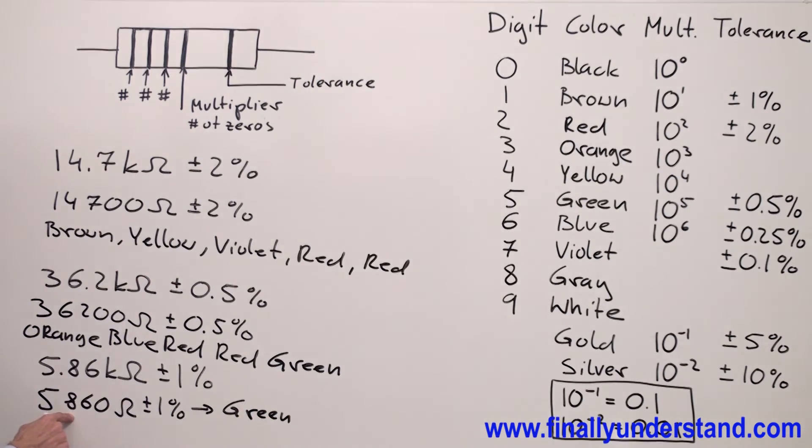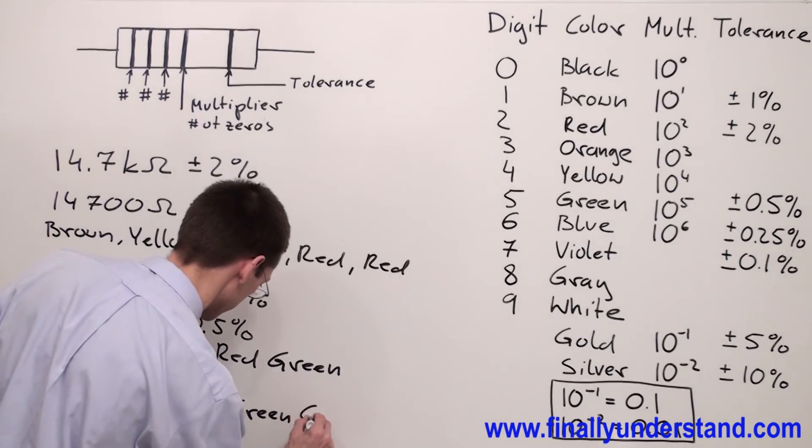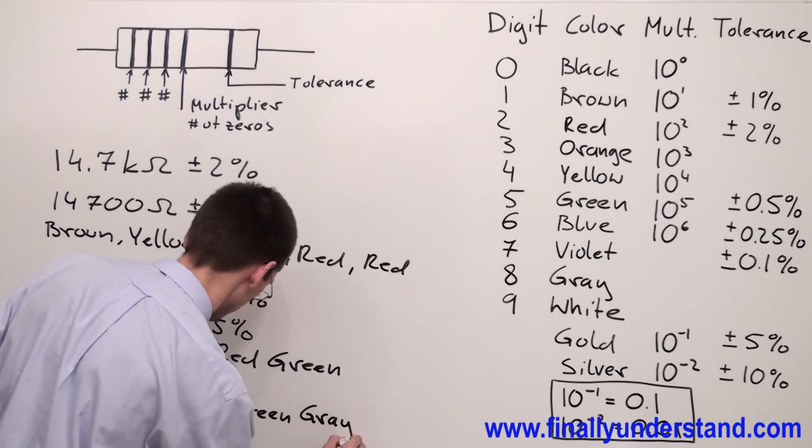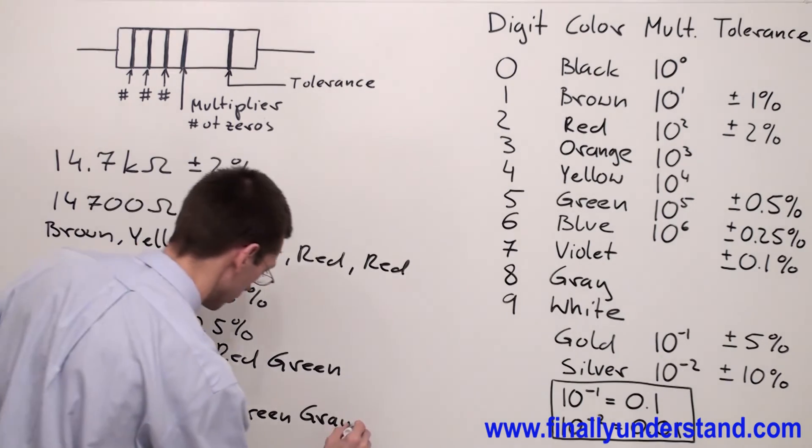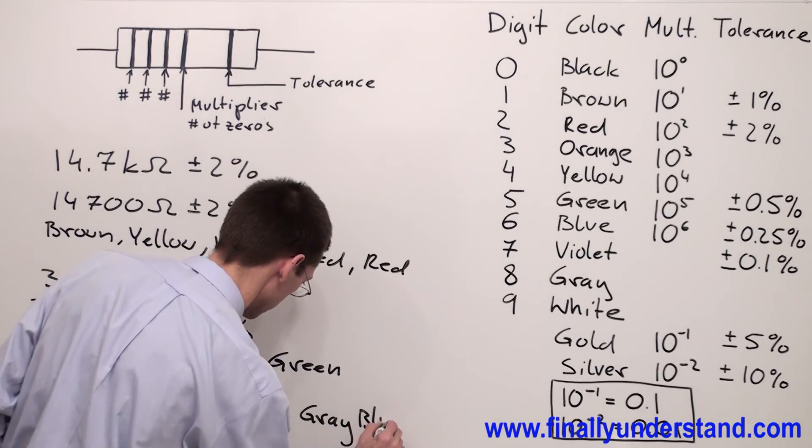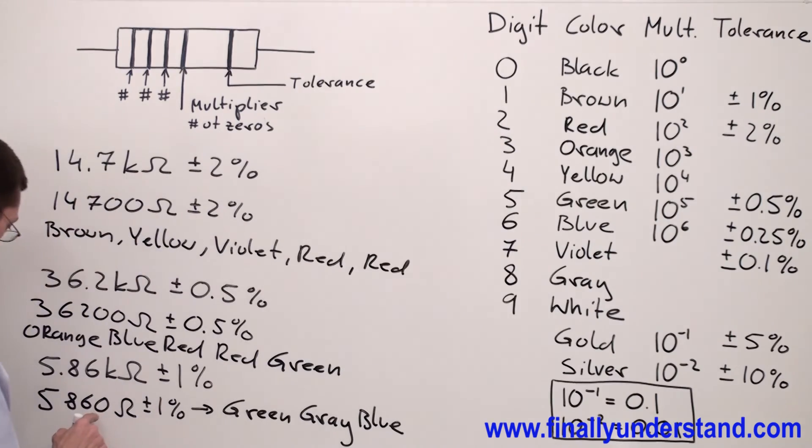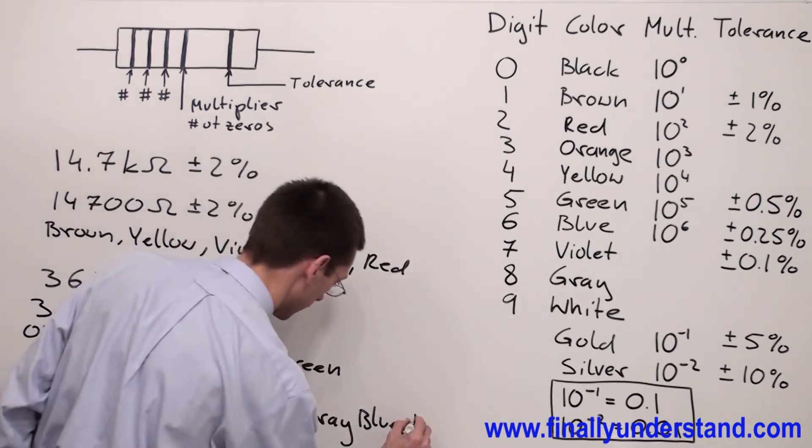The color code for this resistance is going to be 5 is green, 8 is gray, 6 is blue. And how many zeros I have? One zero. I have brown.